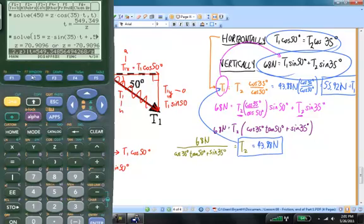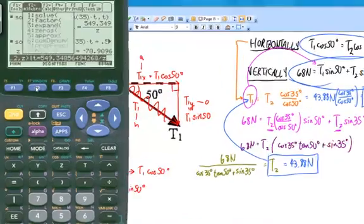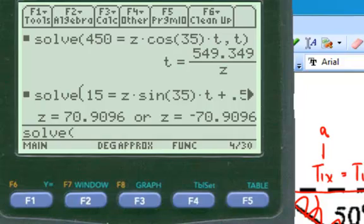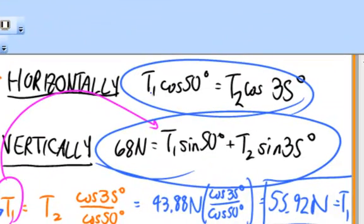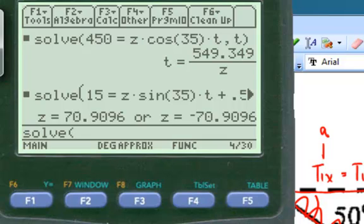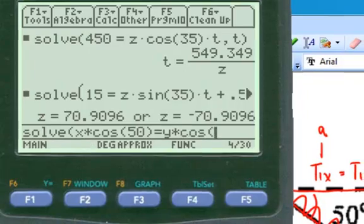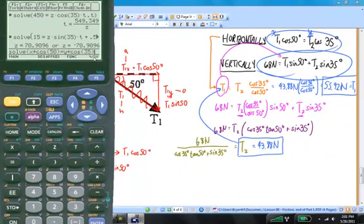I want to use the solve feature, so I'm going to press F2, solve. And now, I'm going to let T1 be equal to X and T2 equal to Y. And I'm going to say that my first equation is X, and you have to say multiplying, the cosine of 50 degrees is equal to Y times the cosine of 35 degrees.